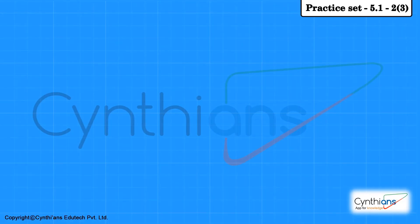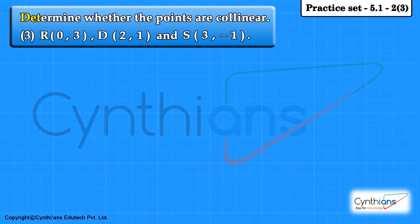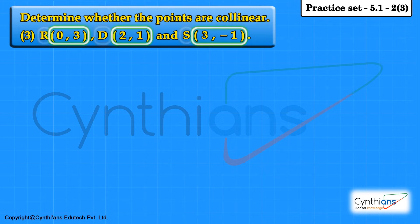Practice set 5.1, question number 2, sub question number 3. Determine whether the points are collinear. The points given are R with coordinates (0, 3), next point B with coordinates (2, 1), and next point S with coordinates (3, -1). We need to find the distances between the pairs of these points.